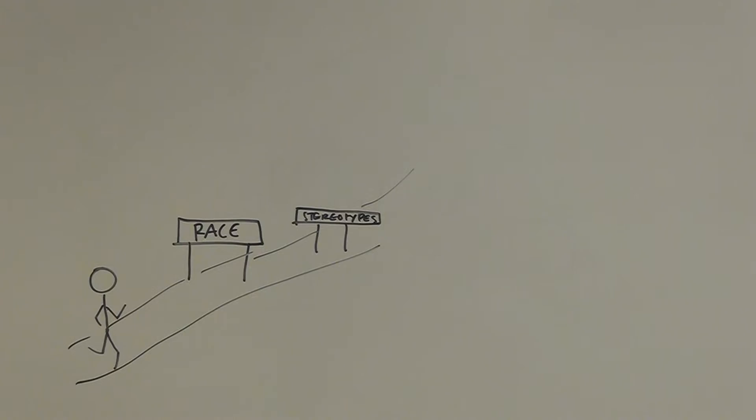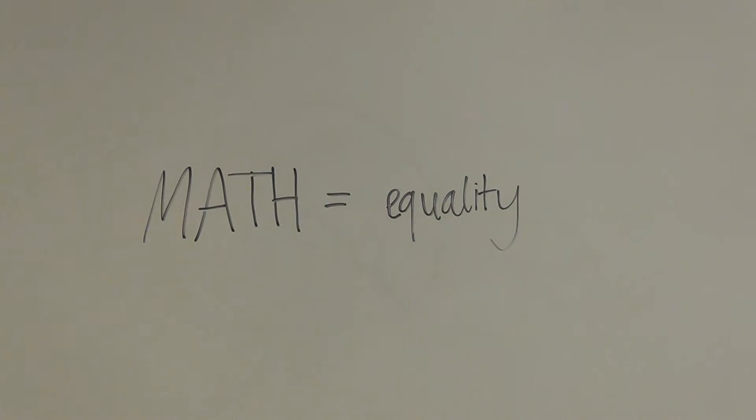This idea of racial discrimination was prevalent throughout the movie. Jaime told the kids that they were going to be thought of as lesser because of their last names. However, math was a way that all people were equal. No matter the color of your skin or the size of your house, you are all equal through math.